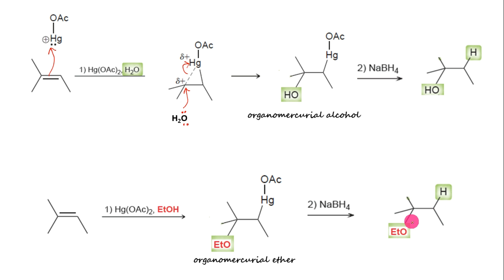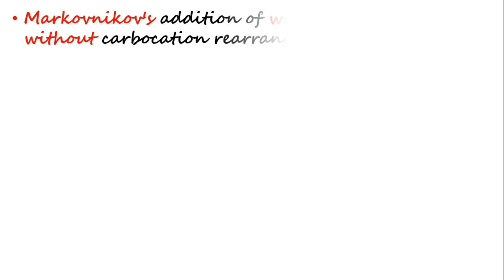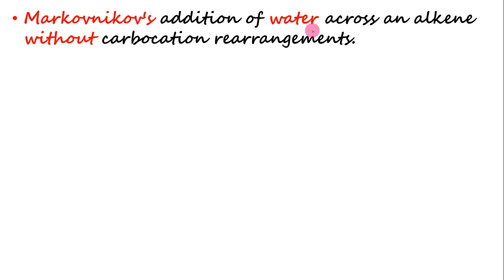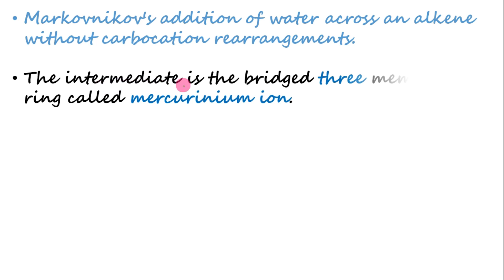When an alcohol is used as the nucleophile, the process is called alkoxymercuration-demercuration. Thus many nucleophiles can be used to open the mercurinium ion and form products accordingly. In summary, the following important points should be remembered: first, oxymercuration-demercuration of alkenes achieves Markovnikov's addition of water across a carbon-carbon double bond without carbocation rearrangements. Second, the intermediate is the bridged three-membered ring called the mercurinium ion.